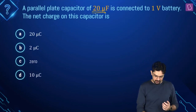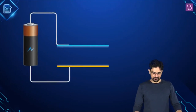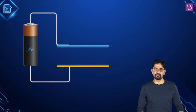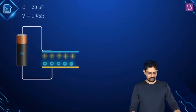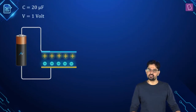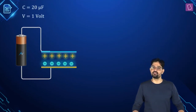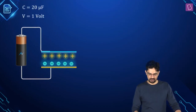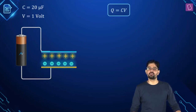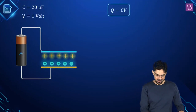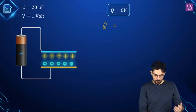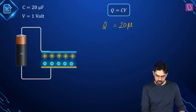Now you might be tempted to apply the formula Q = CV. When this uncharged capacitor is connected to the battery, the upper plate gets positively charged and the lower plate gets negatively charged. When the charging is complete, Q = CV, so Q turns out to be 20 × 1 microcoulomb, that is 20 microcoulomb.